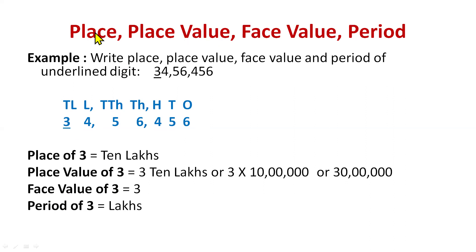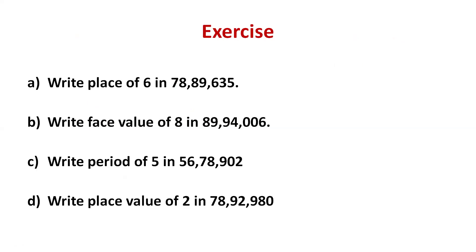Remember the difference: for place, we do not write the digit. For place value, we write the value along with the digit. Face value is the digit itself. Period refers to the house — ones, thousands or lakhs. Now again it's your time to do some workout. Giving you an exercise — write your answers in the comment section. Pause the video and solve, and I'll check your answers in the comment section.